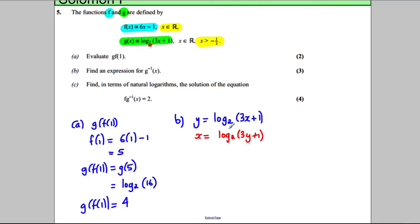I'm going to raise both sides to the power of 2, so that I have 2 to the power of x is equal to 2 to the log base 2 of 3y add 1. This side then becomes just 3y add 1, so 2 to the power of x is that.